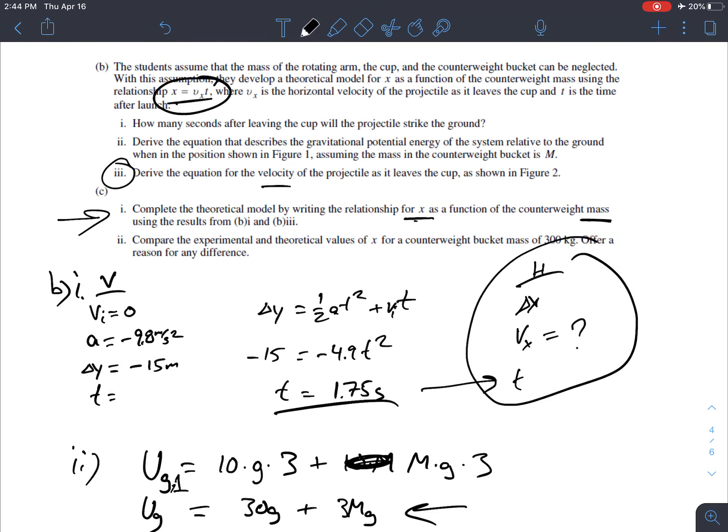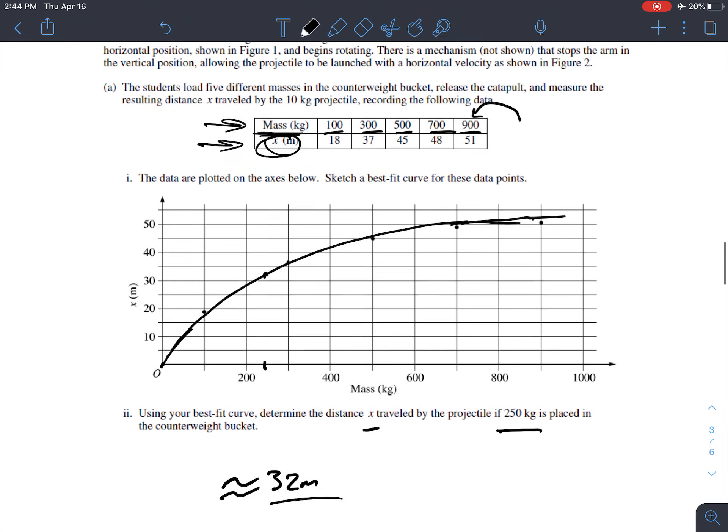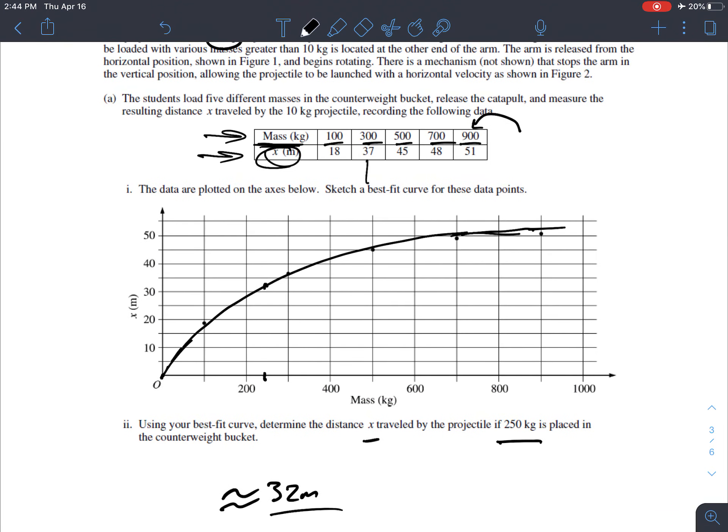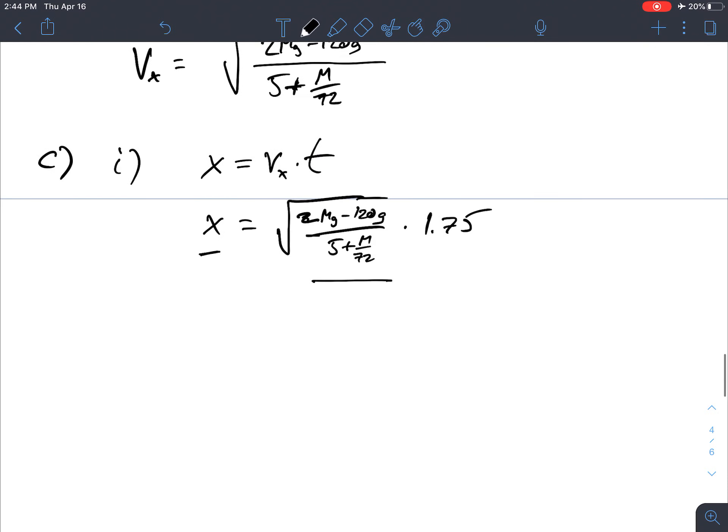And now compare the experimental and theoretical values of x for a counterweight bucket of mass 300kg. So 300kg, they got 37. So the experimental is 37 meters.